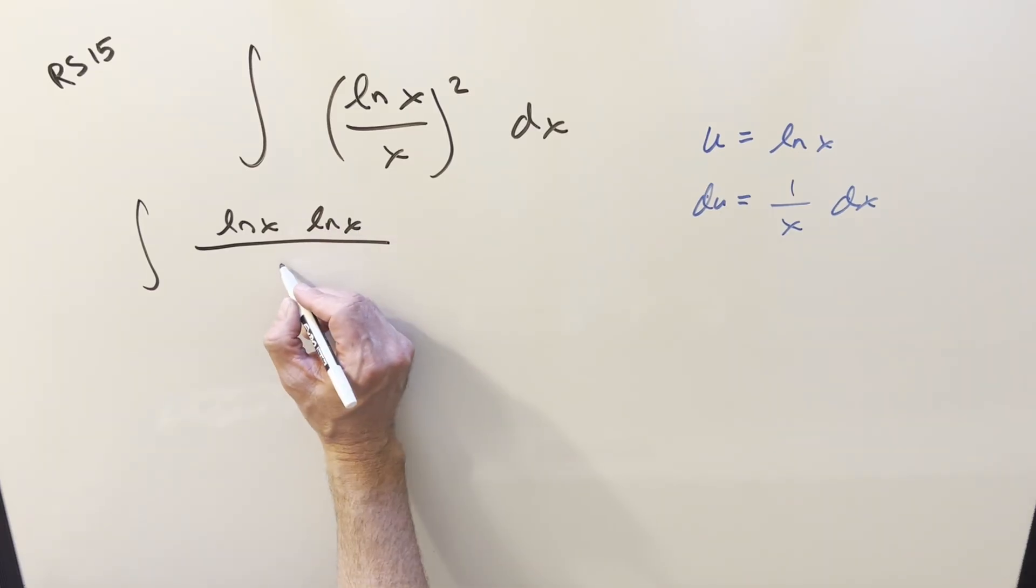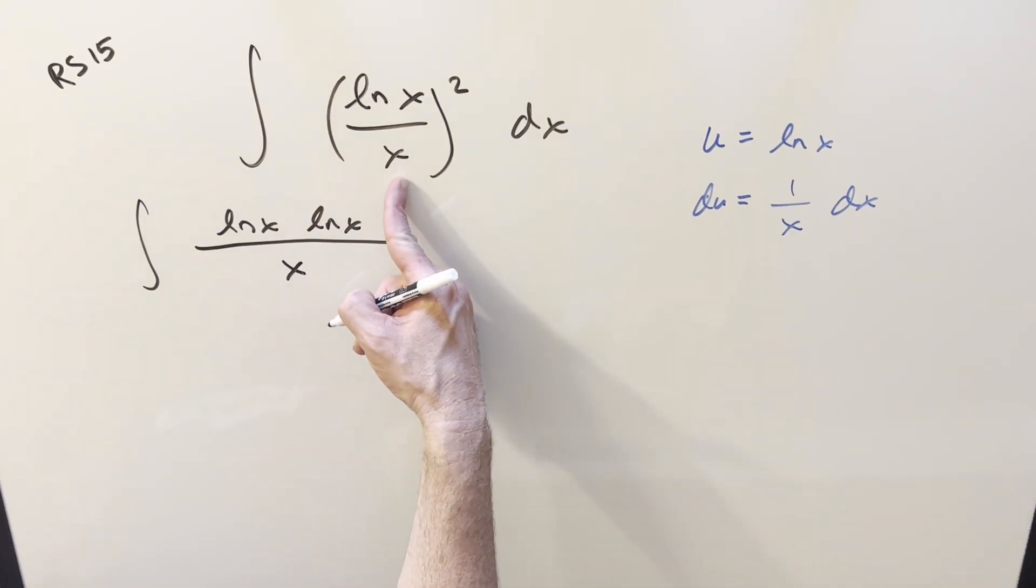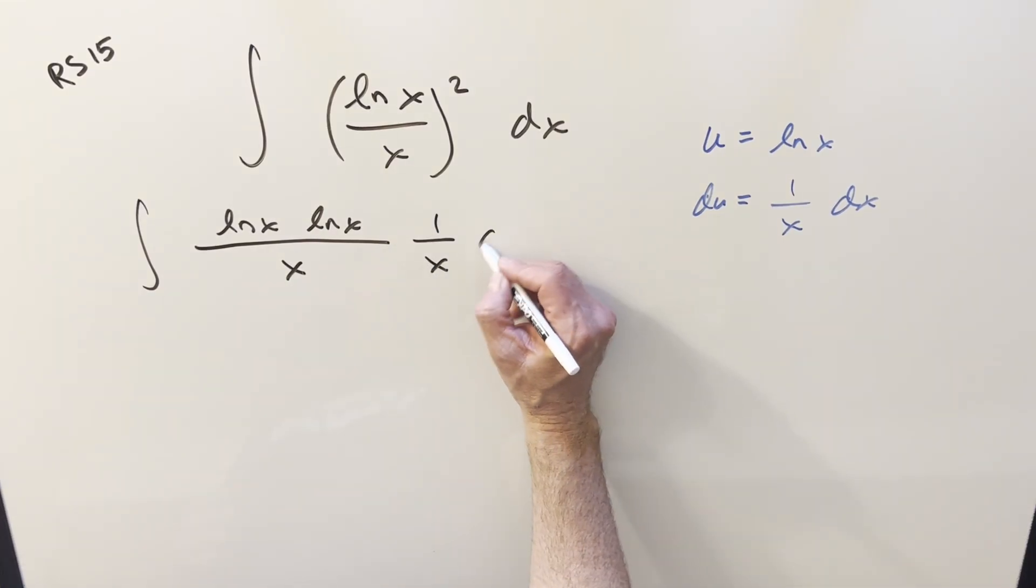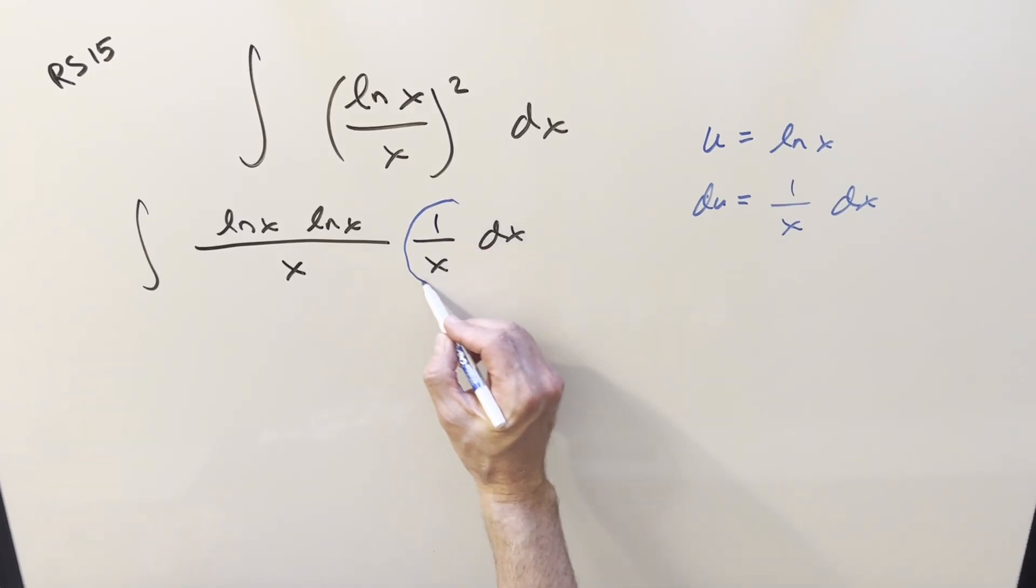And to set up this du, let's write 1 over x, because this is going to become x squared. So I'll leave 1 over x here, and then we'll bring another 1 over x this way. That way we've got our du right here.